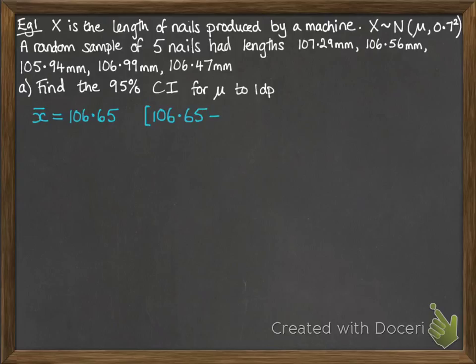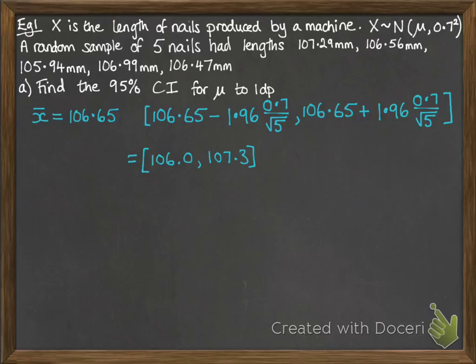Add them all up and divide by five. The confidence interval will be 106.65 as the x̄ value. 1.96 is our z value for 95% confidence interval. Then taking σ as 0.7 over root n, which is root 5. Copy that across, but this time a plus instead of a minus. When you work that out, you get 106.0 and 107.3.